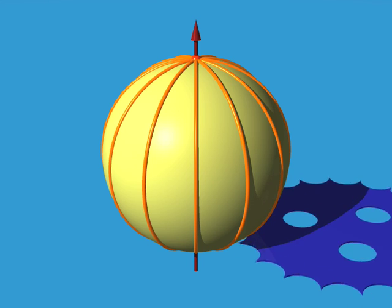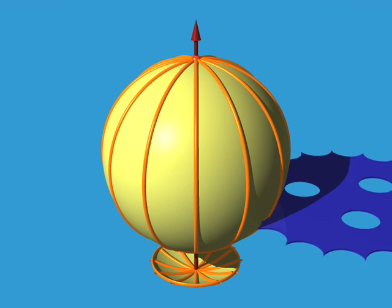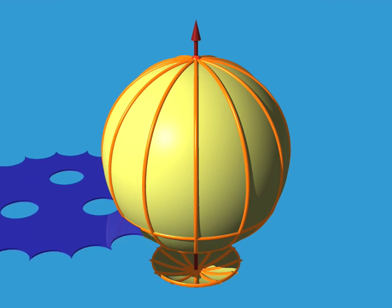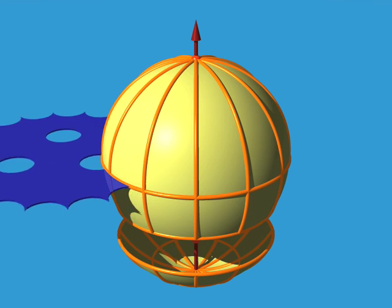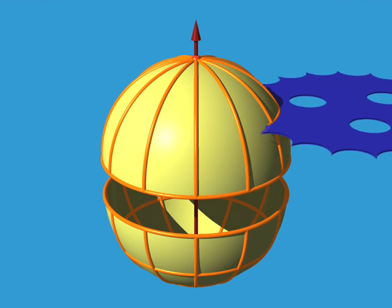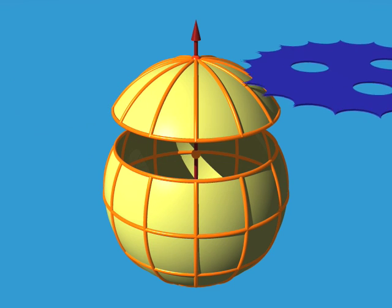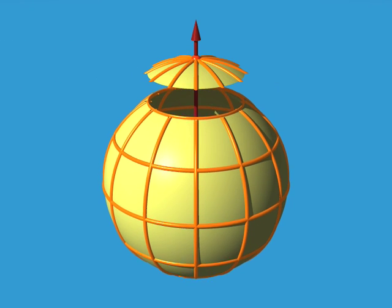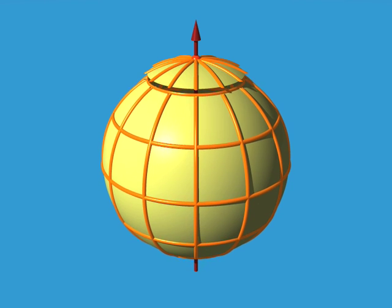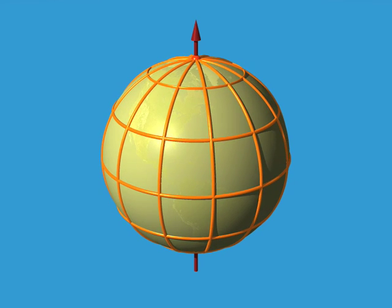And now if we slice the sphere up along a plane at right angles to this axis, we get a bunch of circles called parallels. So now our sphere is covered by two networks of curves, the meridians and the parallels.